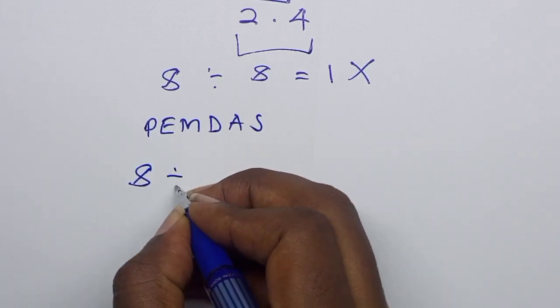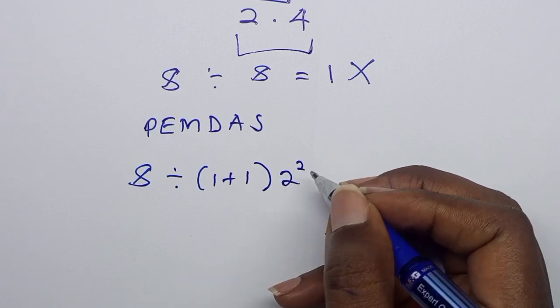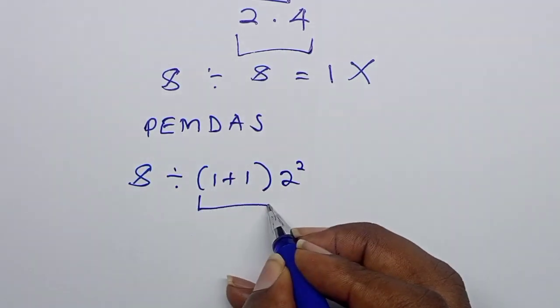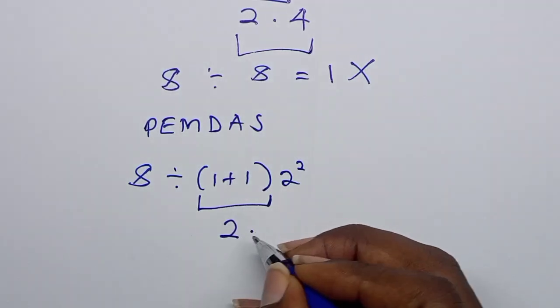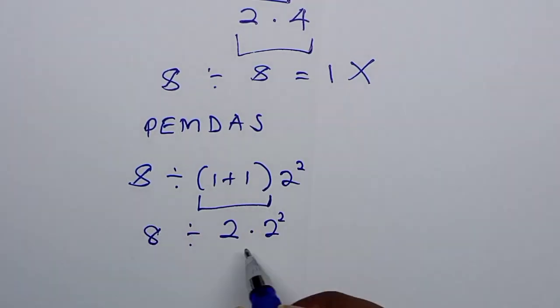So if you have 8 divided by 1 plus 1 times 2 squared, first what we have to work is parenthesis. So we have parenthesis here, 1 plus 1 which gives us 2. So we shall have 2 times 2 squared divided by 8 on this side.